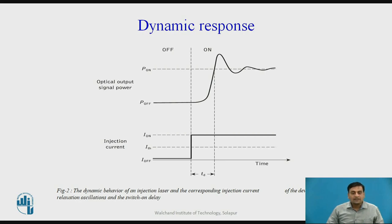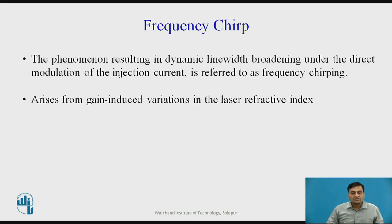At data rates above 100 megabits per second, this behavior can produce serious distortion in the pulse shape, so reducing td and damping the oscillations is highly desirable. The switch-on delay is caused by the initial build-up of photon density resulting from stimulated emissions. It is related to minority carrier lifetime and the current through the device, and may be reduced by biasing the laser near threshold.